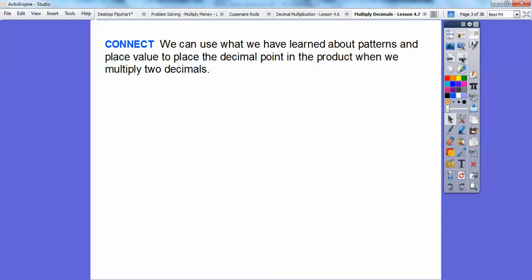We can use what we have learned about patterns and place value to place the decimal point in the product when we multiply two numbers. For example, one times 0.1 equals 0.1. But what if we multiply 0.1 times 0.1? It equals 0.01. So when we multiply by another decimal, it moves the decimal one place to the left.